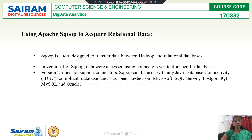In Sqoop version 1, I will be using connectors between Hadoop and the relational database. These connectors are nothing but plugins. In Sqoop version 2, these connectors are not used. Instead of connectors, I will be using Java Database Connectivity to connect the relational database and Hadoop.